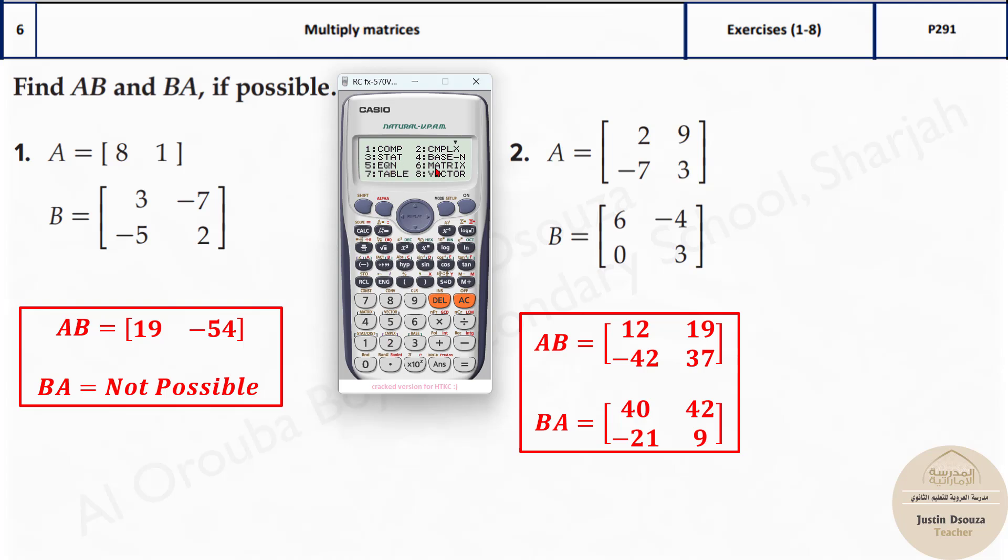Mode 6 is the matrix. Press option 1 and now type in the matrix A that is 1 by 2 because there's only one row and two columns right. It's 1 by 2.